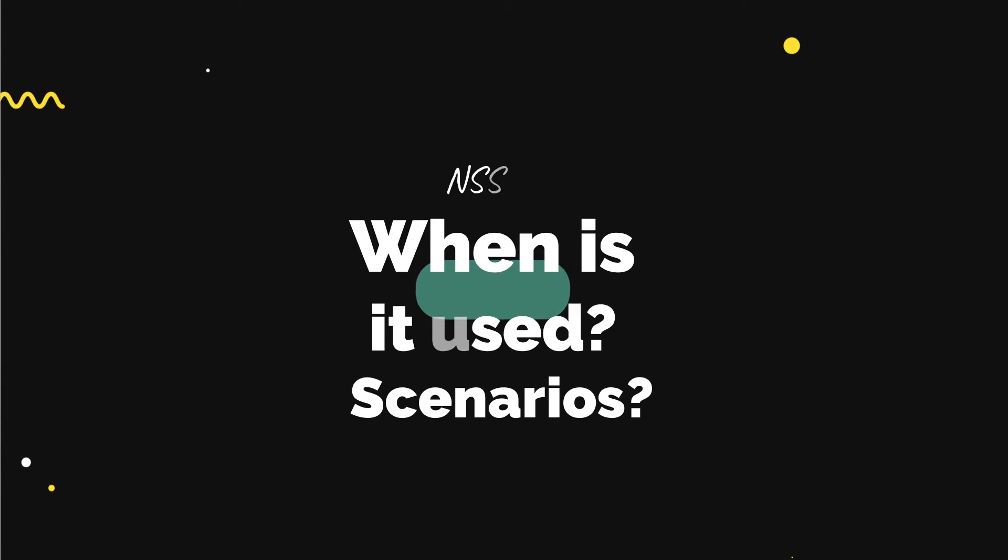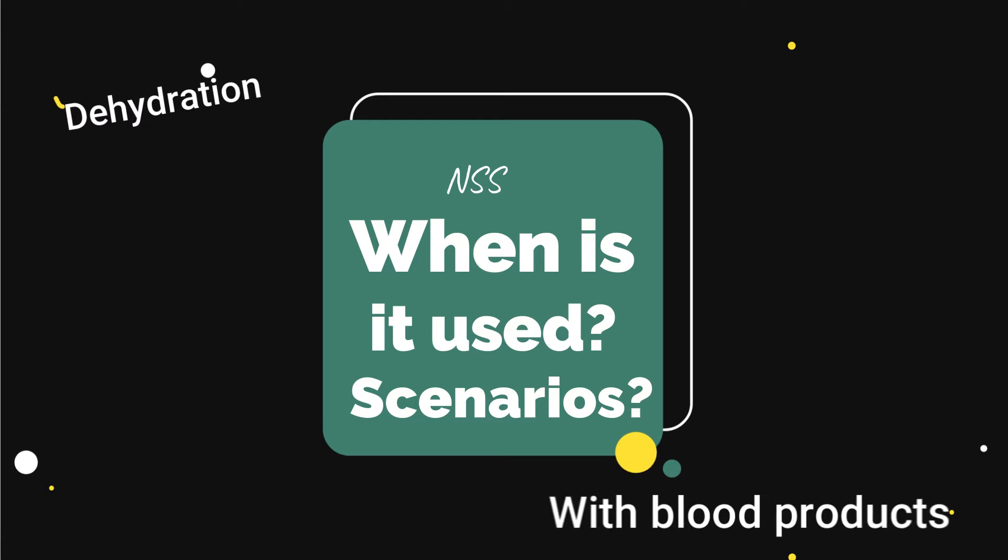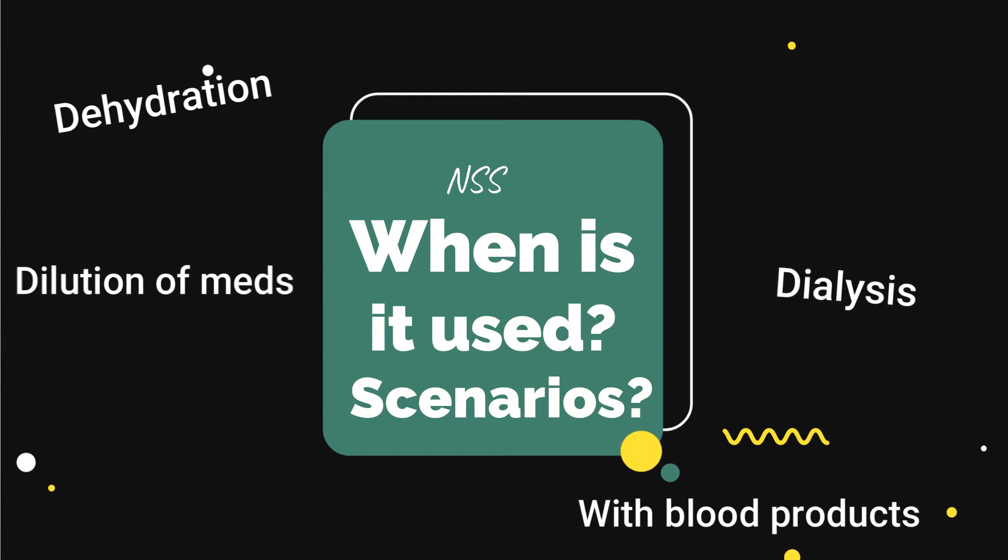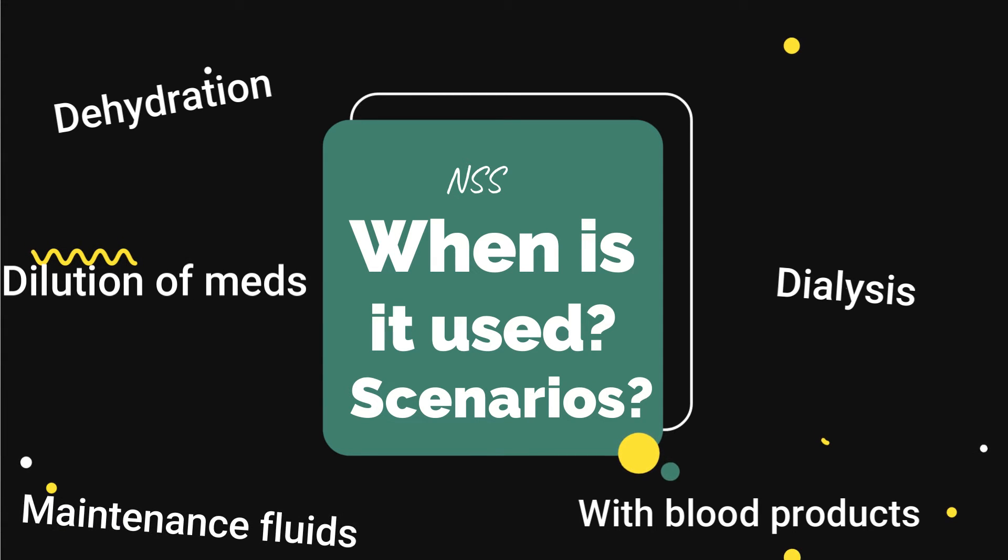When would you use normal saline solution? The most common scenarios include dehydration, administration of blood products, dialysis, diluting medications, maintenance fluids, metabolic alkalosis, and resuscitation or CPR. Normal saline is not always the first pick, especially for patients with heart or kidney issues, as you really have to make sure you do not fluid overload them. The amount of salt in a liter bag can be too much for these patients, causing them to hold onto too much fluid.